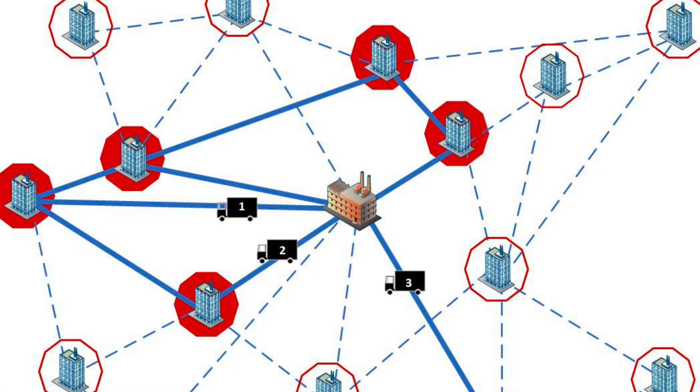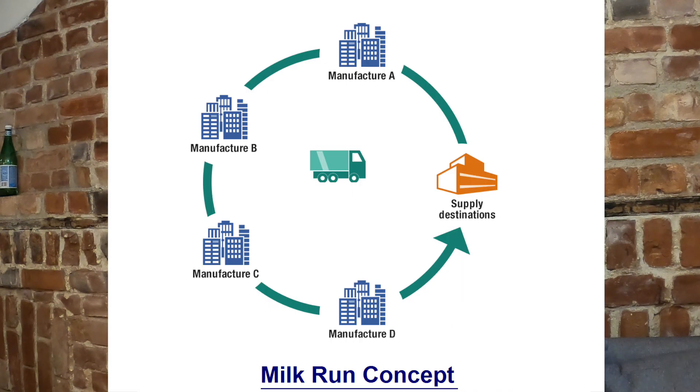So what is the vehicle routing problem? It is an optimization problem that assumes you have an origin facility with a fleet of trucks and some suppliers spread around the city. The idea is to use the trucks efficiently to go to different locations or suppliers in order to minimize the time or the costs. This concept is also associated with what we call a milk run, which is the idea of transporting mixed goods from different suppliers to one unique customer.